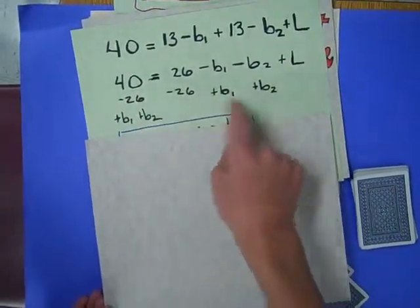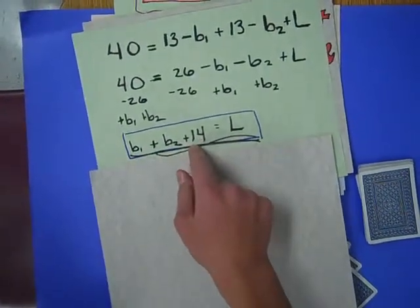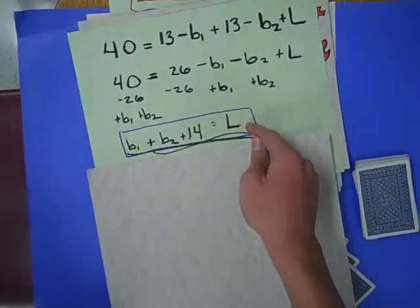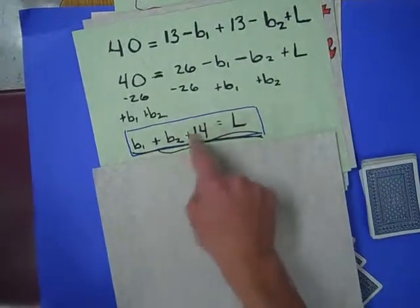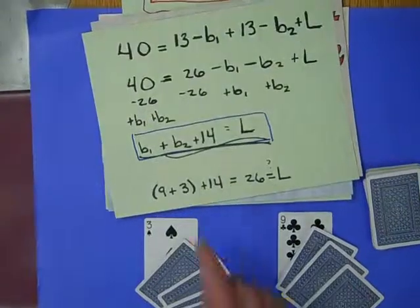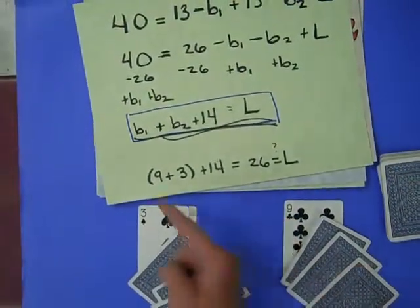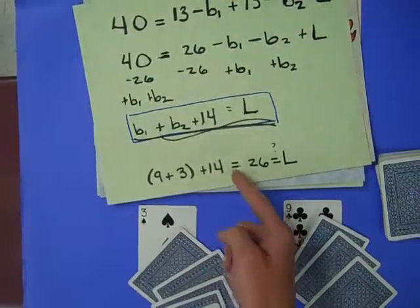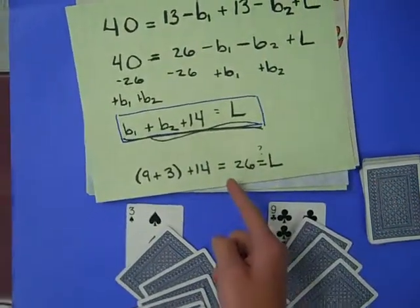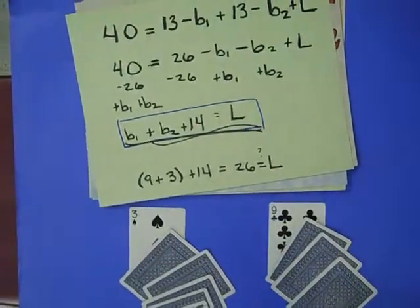So we're going to subtract 26 and add the bases. So base 1 and base 2 plus 14 will equal our leftovers. This will be the same no matter which base you have. In our case, we used 9 and 3 as our bases. So 9 plus 3 plus 14 will equal 26. 26 is what our leftovers should be. Let's see if we're right.